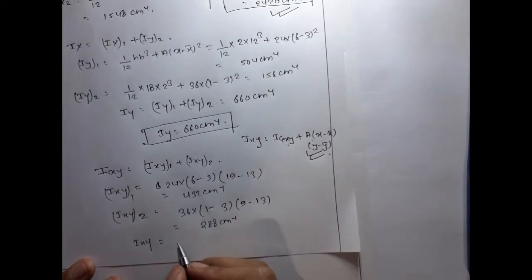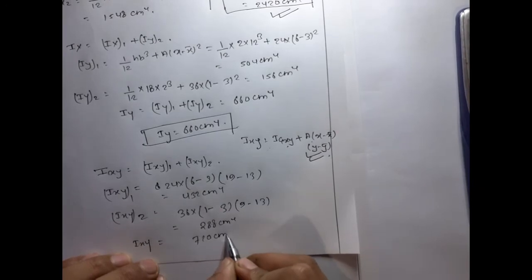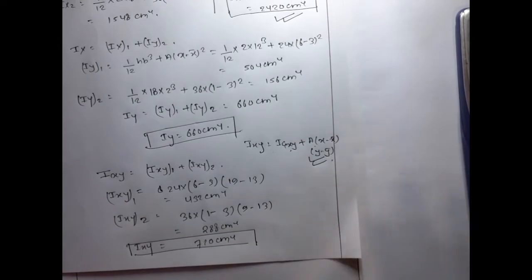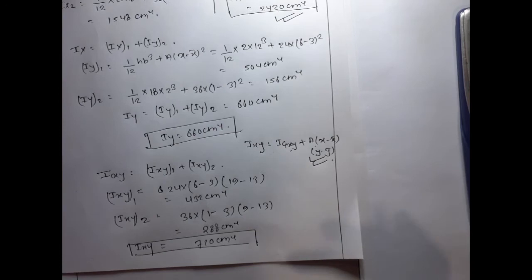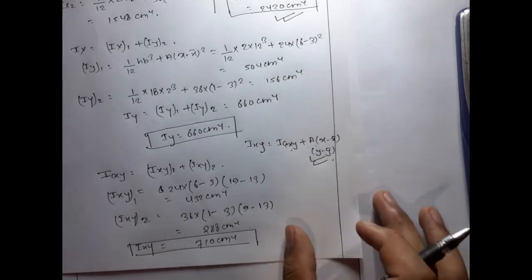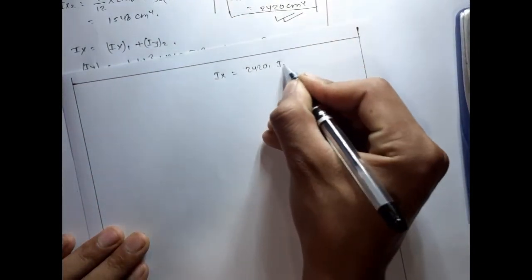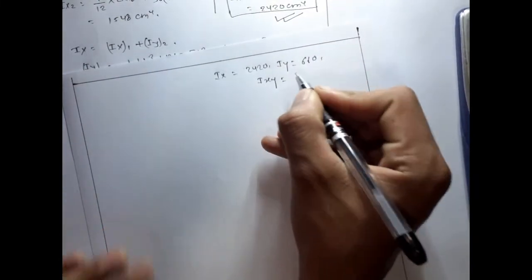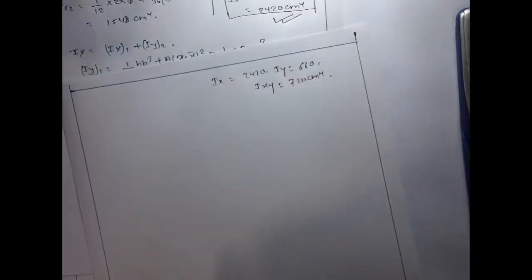Total product of inertia: Ixy = Ixy1 + Ixy2 = 432 + 288 = 720 cm⁴. So our computed values for the centroidal axes are: Ix = 2420 cm⁴, Iy = 660 cm⁴, and Ixy = 720 cm⁴. Now we proceed to find the principal moment of inertia.